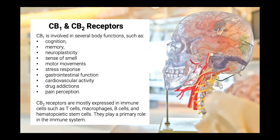CB1 is involved in several body systems such as cognition, memory, neuroplasticity, the sense of smell, motor movements, stress response, gastrointestinal function, cardiovascular activity, and drug and pain perception. Cannabinoid 2 receptors are mostly expressed in immune cells. They play a primary role in the immune system but also target smooth muscle cells, cardiac muscles, and nerves within the peripheral and central nervous system.